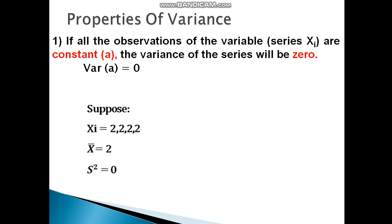For example, suppose Xi is equal to 2, 2, 2, 2. Then x-bar is equal to 2, and the sum of squared deviations (xi minus x-bar) squared is equal to zero. So variance equals zero.